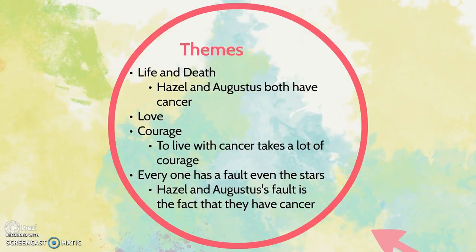Some of the themes of the novel are life and death. Hazel and Augustus both have cancer, and as most of us know, cancer can kill you. A second theme is love — Augustus and Hazel both end up falling in love. A third theme is courage. Personally, I think it takes a lot of courage to live with cancer like both of the main characters do.